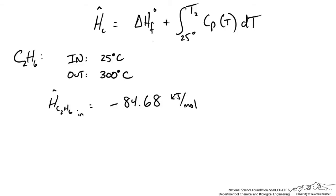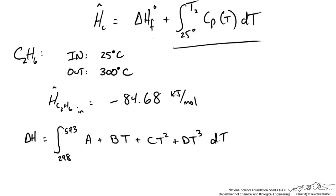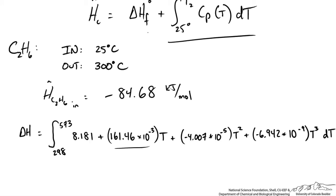For the ethane outlet we need to evaluate the sensible heat integral. We look up the coefficients for the heat capacity as a function of temperature. The values were looked up for Kelvin, so we integrate from 298 to 573 Kelvin. The heat capacity has the form a + bT + cT² + dT³. We look up the coefficients for ethane, noting they are usually given to some power of ten. Evaluating this integral gives a sensible heat difference of roughly 19.27 kilojoules per mole.